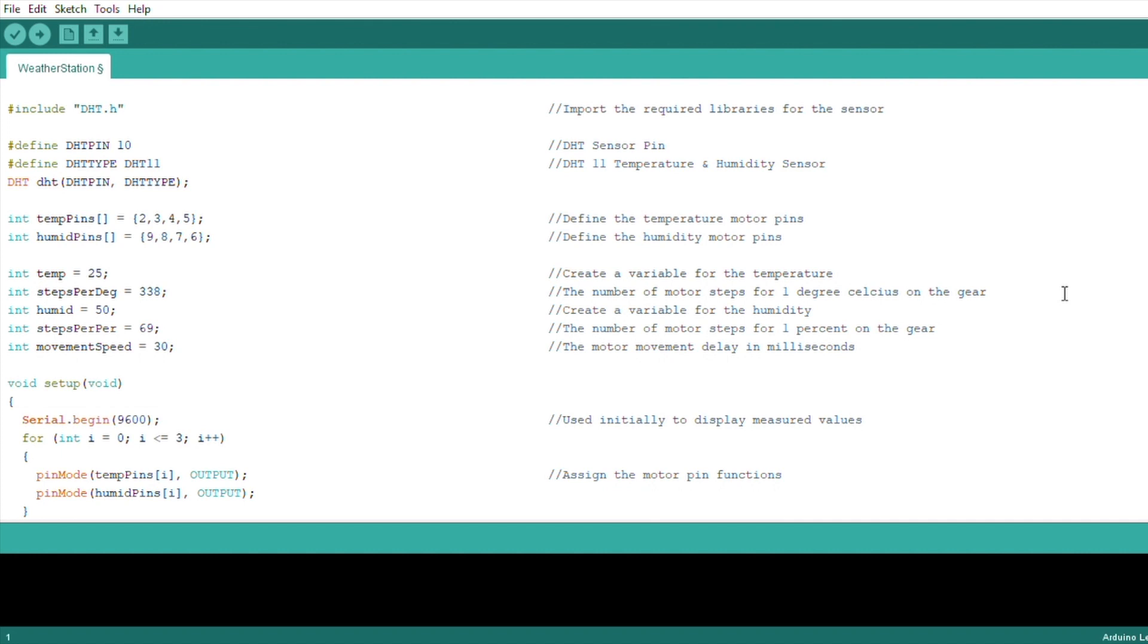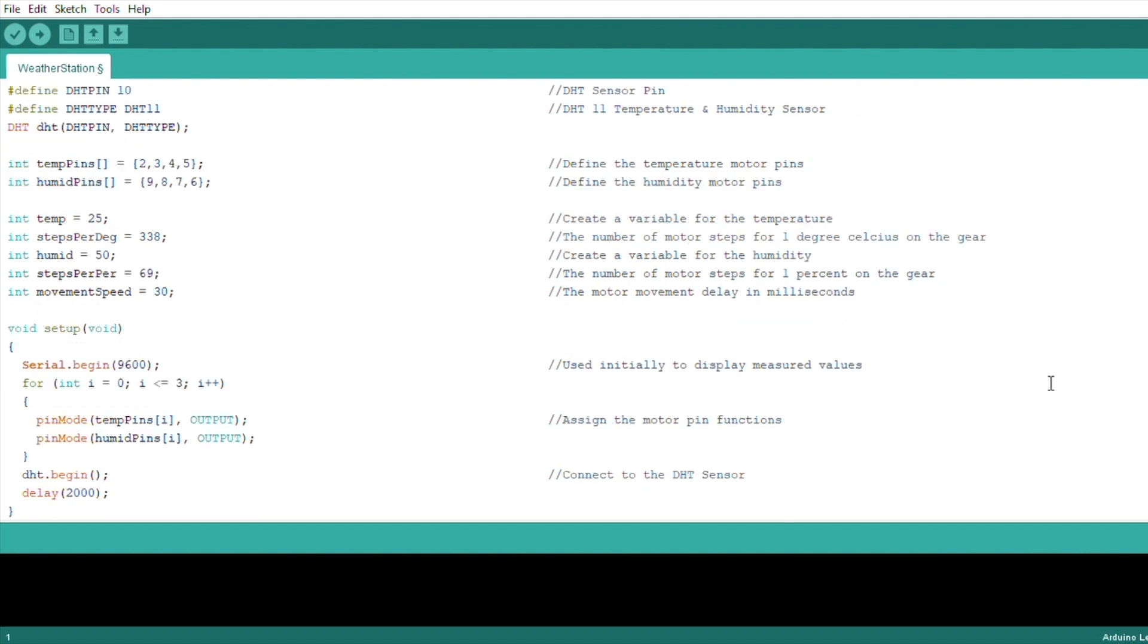We also have a motor movement speed. The speed is essentially a delay between steps, so a higher value is a slower speed.